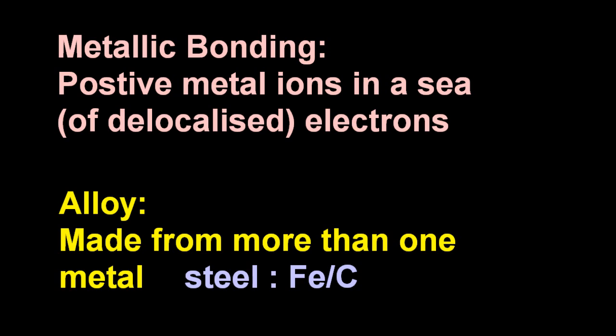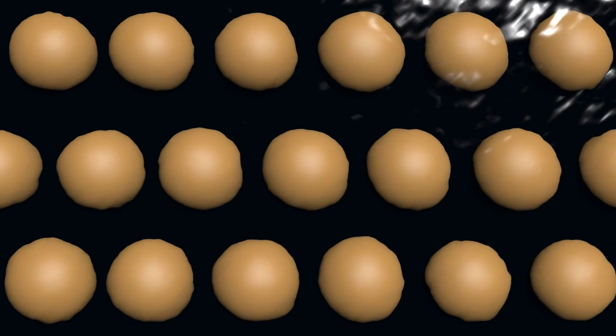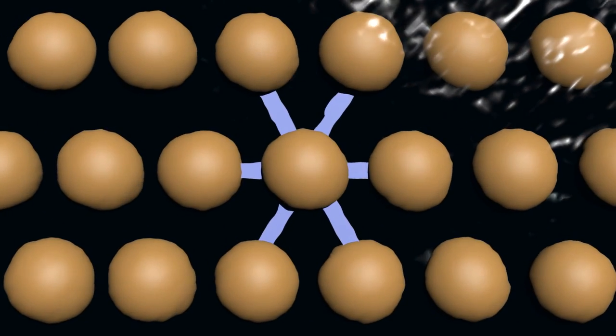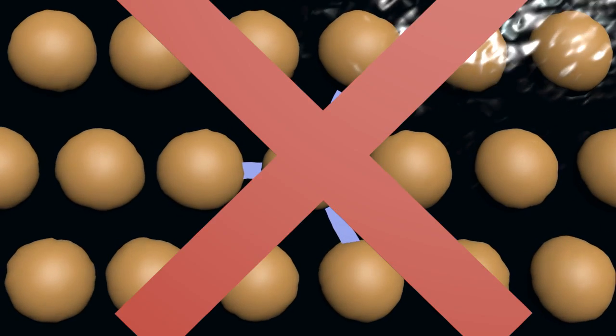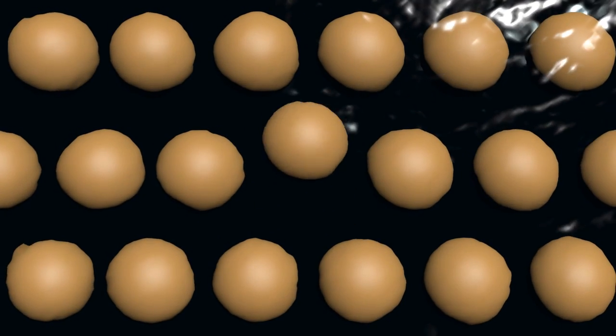It's a mistake to think that the positive metal ions are attracting each other in metallic bonding. That's not true at all. They're positive, they're going to repel each other. But metal ions have non-directional bonds that are attracted to the sea of electrons.